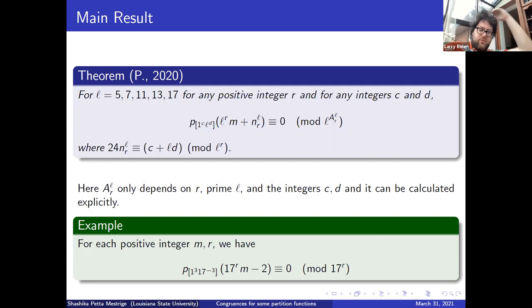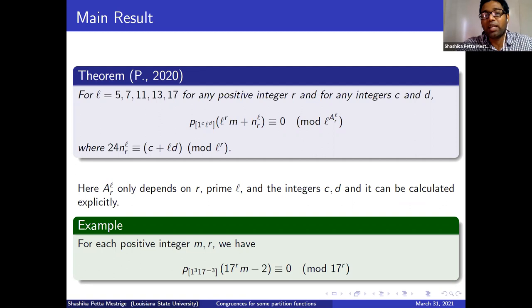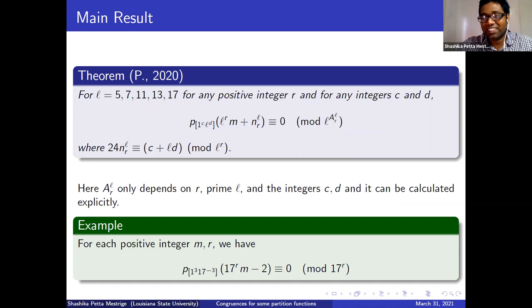Let me demonstrate with an example. For C equals 3, D equals minus 3, and L equals 17, we can calculate A_{R,L}; that equals minus 2. So we have this congruence explicitly. [Question from audience]: For other primes bigger than 17, do you expect similar congruences, or can you only prove it one prime at a time? [Speaker]: I think they exist, and I'll explain what the problem is for other primes — we have to construct a basis for modular functions on Gamma_0(L) for those primes.